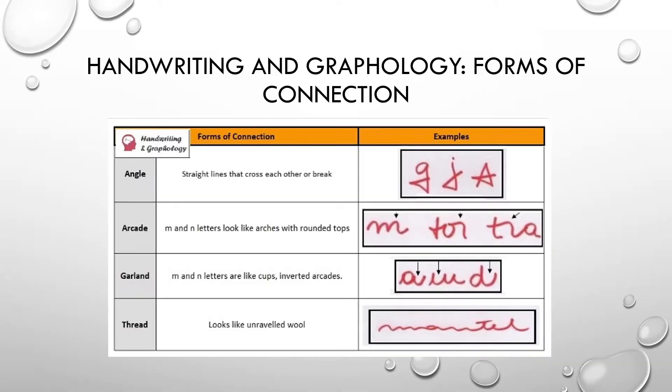Now we're getting into forms of connection. Look at your G's, your J's, and your A's. There's a lot of straight lines that cross each other. I want you to write down angle.